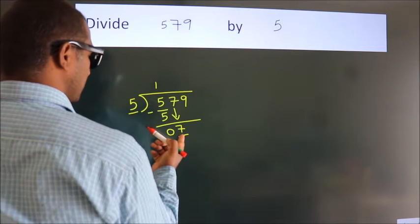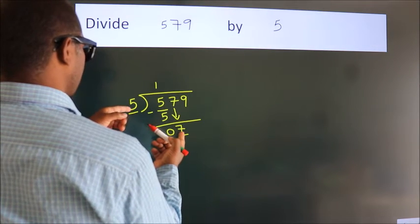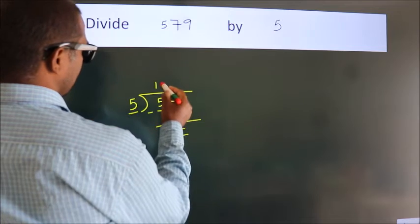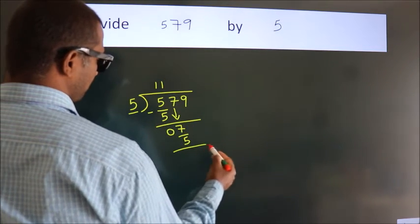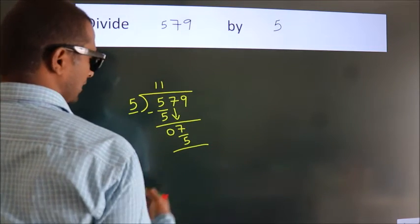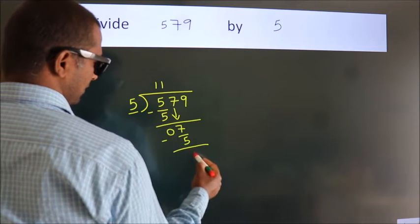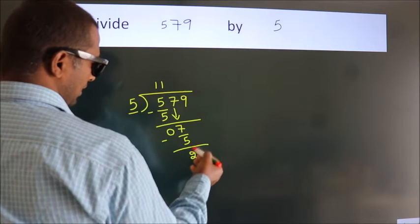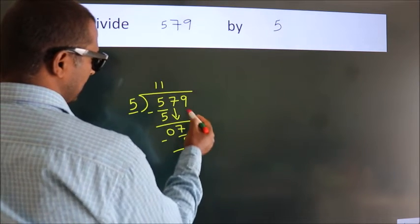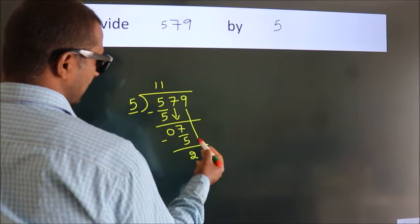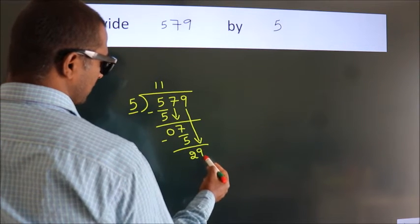A number close to 7 in the 5 table is 5 once — 5. Now we subtract and we get 2. After this, bring down the beside number, so 9 comes down.